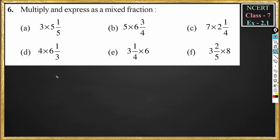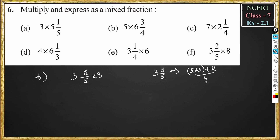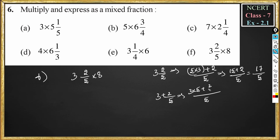Now I'll do problem F: 3²/₅ into 8. We convert 3²/₅ into an improper fraction: 5 into 3 plus 2, divided by 5. This gives 15 + 2 by 5, equal to 17/5. Alternatively, writing 3 + 2/5 with LCM 5 gives (3 × 5 + 2) / 5; the 5s cancel, giving 15 + 2 by 5, also equal to 17/5.